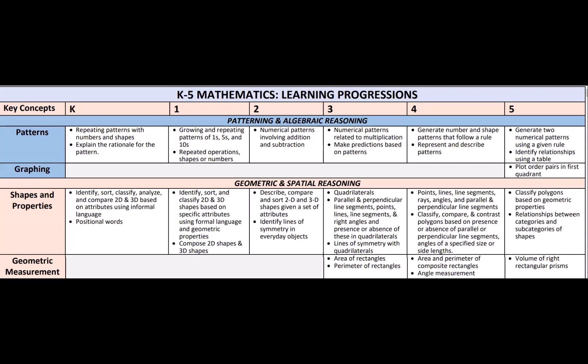Now let's look at the second part of Unit 7: exploring geometry. Students have had experience sorting, classifying, analyzing, comparing, and contrasting 2D and 3D shapes since kindergarten, initially using informal language and later more formal language to describe shapes using attributes or properties. Students classified shapes by counting sides, angles, and vertices, then moved into deeper analysis of attributes such as parallel or perpendicular lines and types of angles—acute, right, and obtuse. Students then started to see relationships between shapes that share attributes.